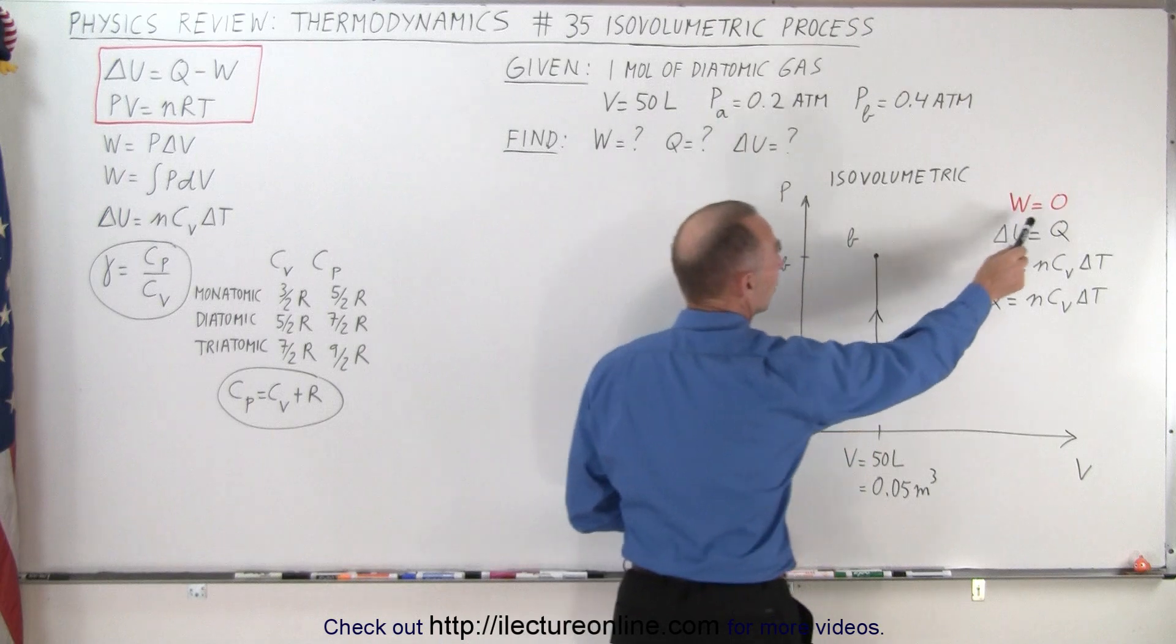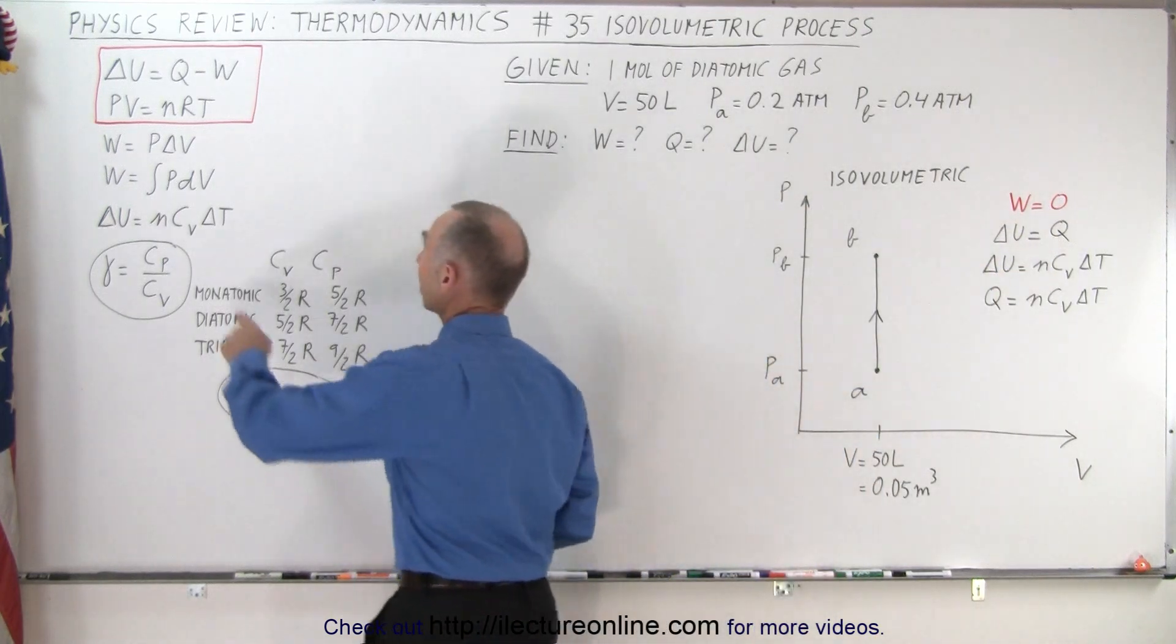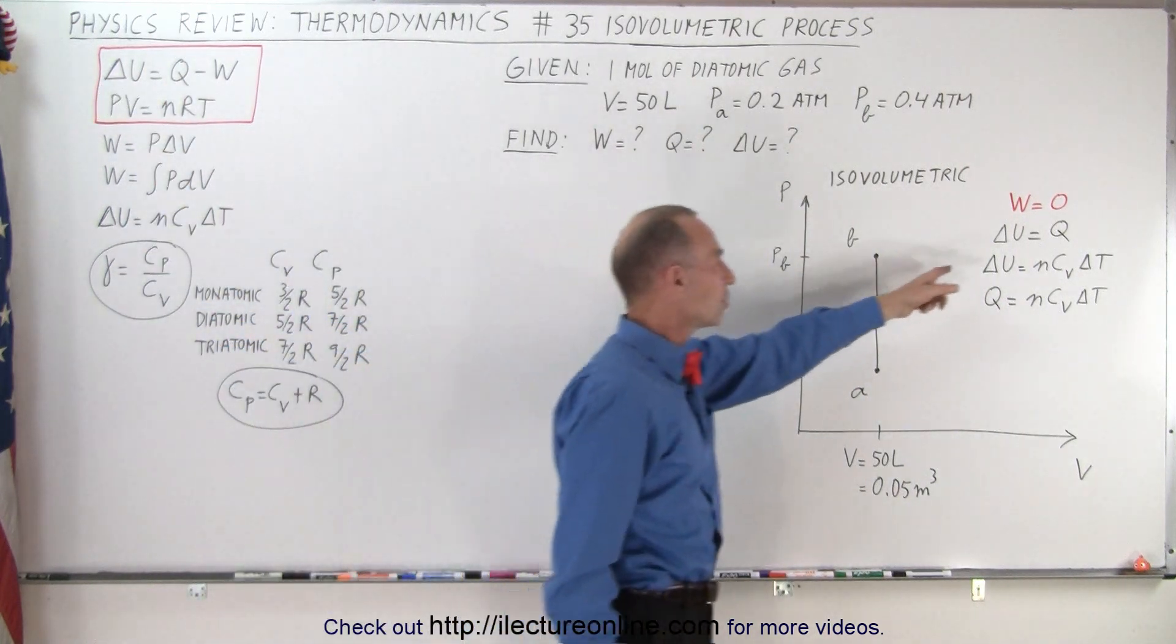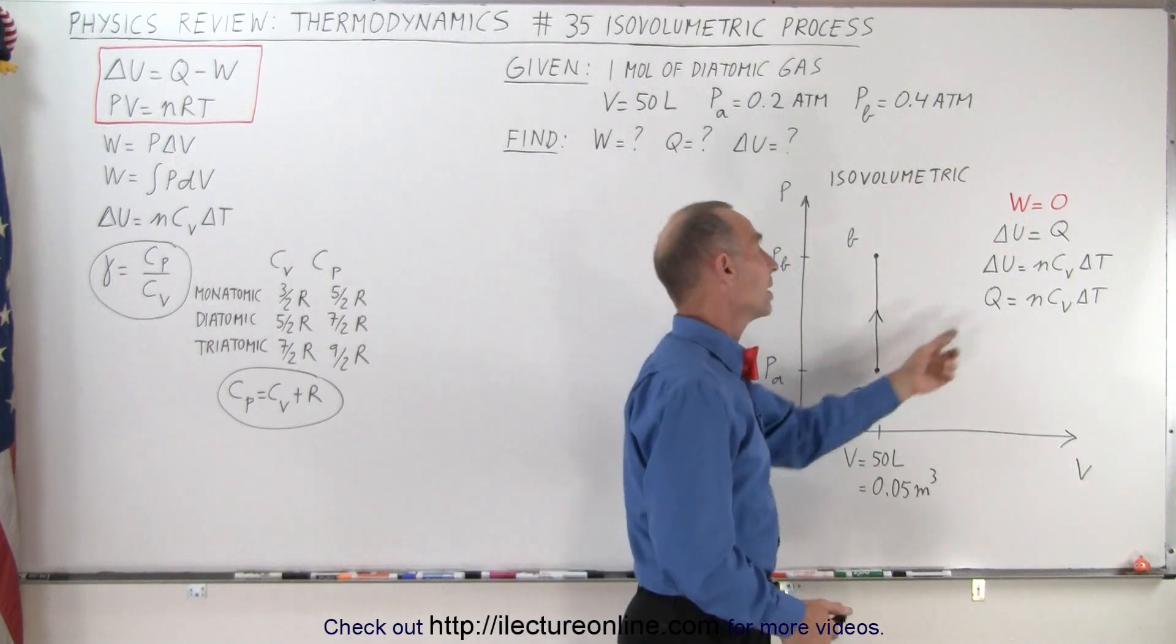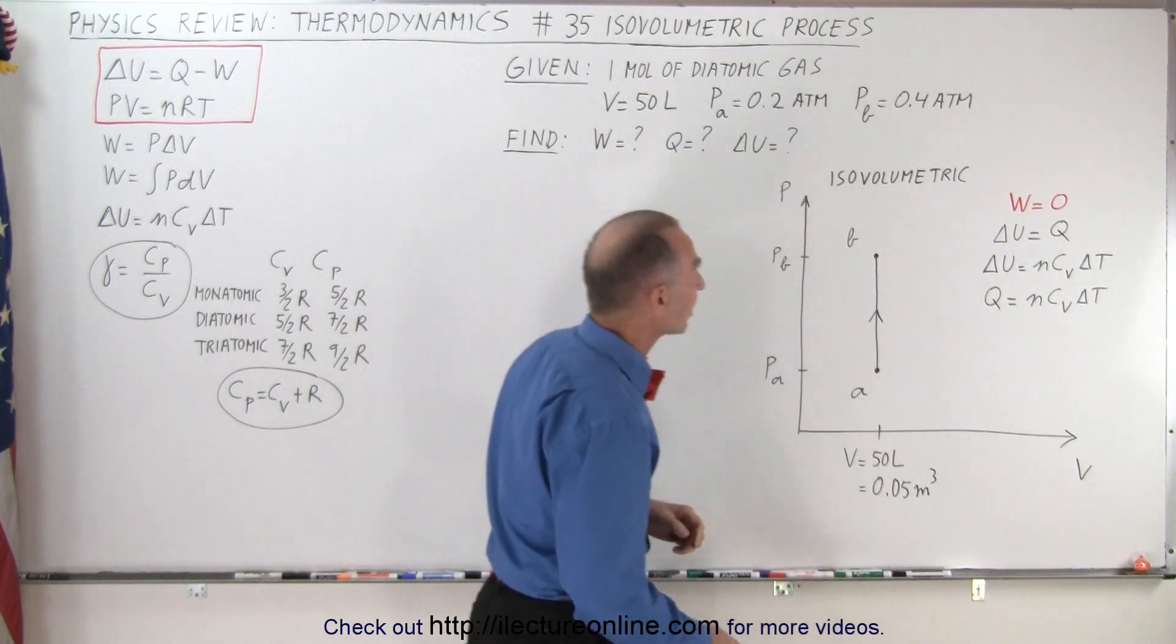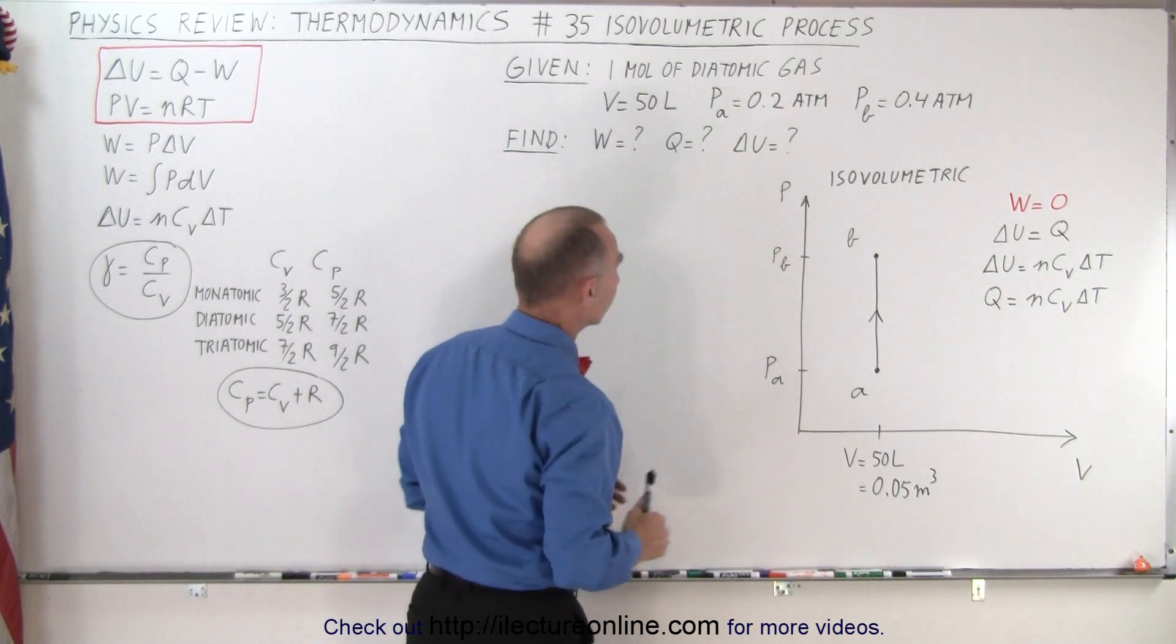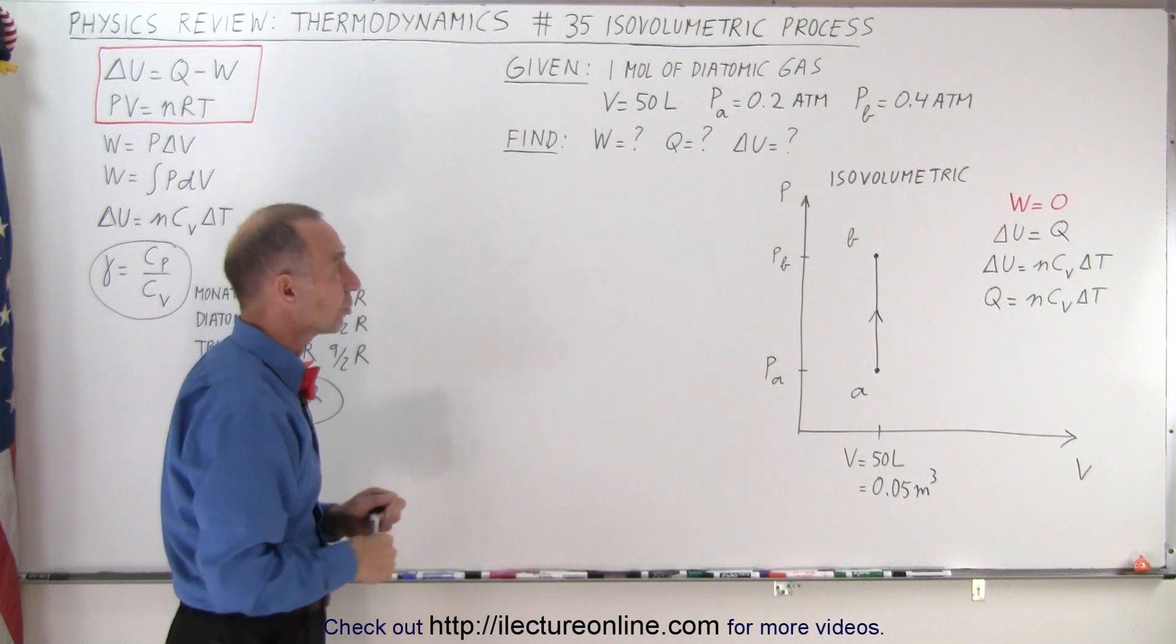Notice work done always will be zero and therefore ΔU equals Q because when we plug in zero for work done these two are equal to one another. Since ΔU is always equal to N·Cv·ΔT, that means Q must also be N·Cv·ΔT. And again we're trying to find work done, Q, and ΔU. Q is heat added to the gas, ΔU is the change in internal energy.